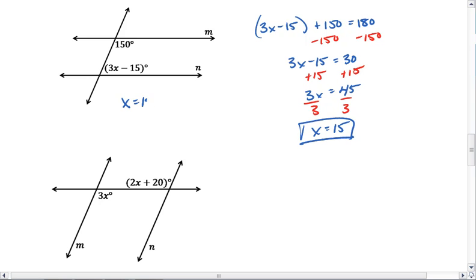Thus, if x equals 15, that would make these two consecutive interior angles supplementary, which would allow us to conclude that m is parallel to n.